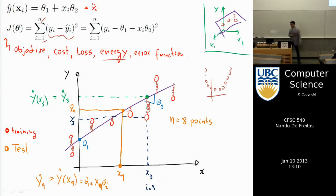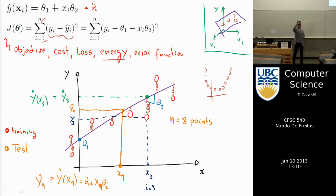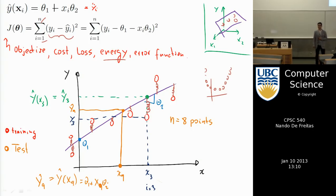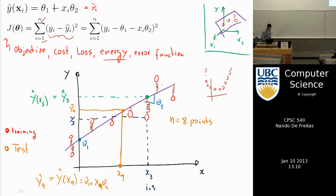All distances in least squares are measured vertically. This is the criterion Gauss gave us several centuries ago and it's still very popular. There are better ways of measuring distances — for example, if all points tend to be in a vertical line you might prefer the perpendicular distance to the line. We'll see methods that try to do this later.